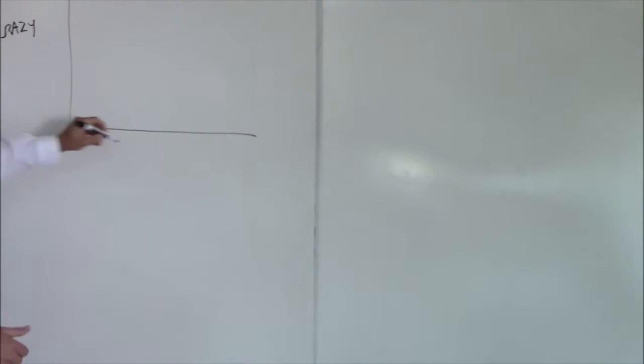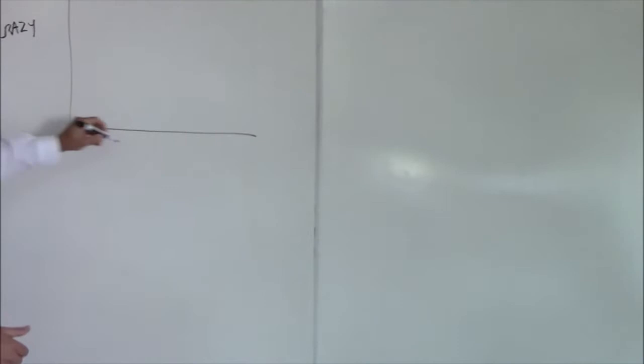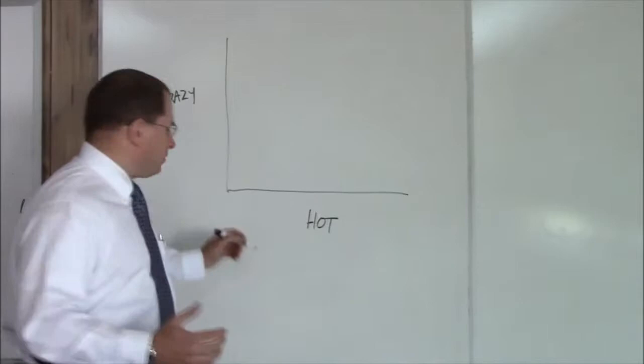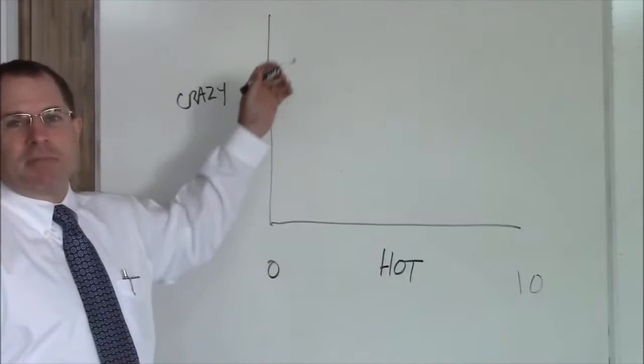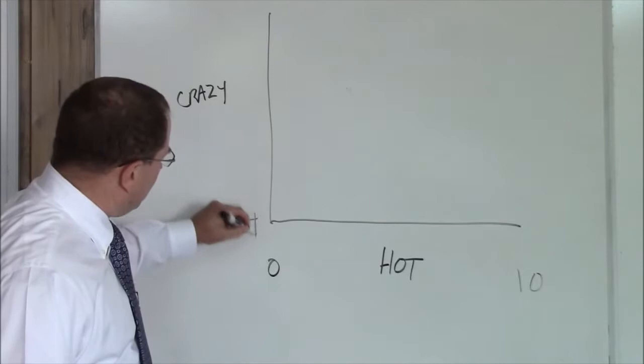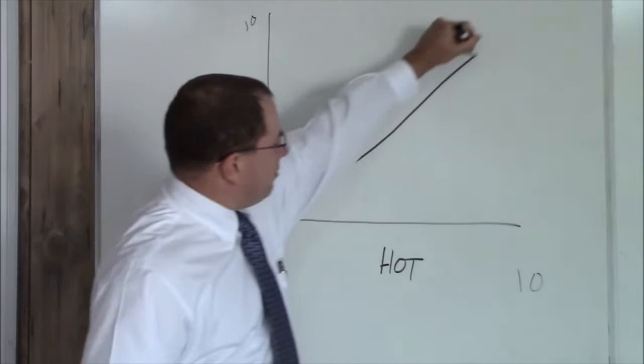You have your crazy axis and your hot axis. Hot is as usual measured from 0 to 10. We're all familiar with that. Crazy is measured from 4 to 10 because of course there's no such thing as a woman who's not at least a 4 crazy. So you've got 4 to 10. This is your hot crazy line right here.